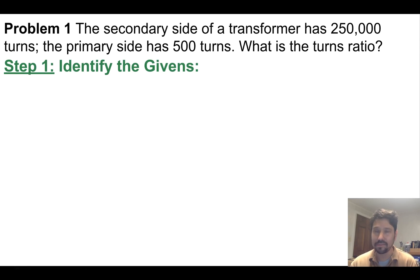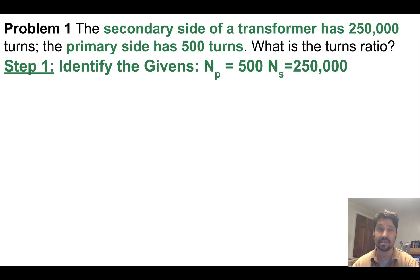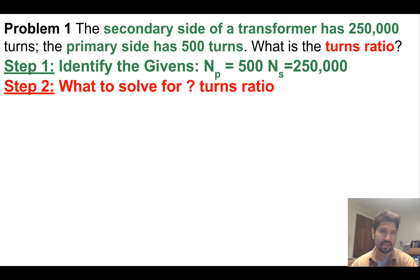Here comes our math problems. The secondary side of a transformer has 250,000 turns, the primary side has 500 turns. What is the turns ratio? First we identify our givens: NP is 500 the primary side and NS is 250,000 the secondary side. What are we going to solve for? We're solving for the turns ratio, and to do the math we need to remember what is a turns ratio.